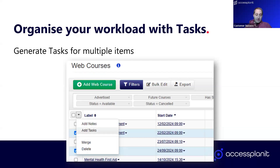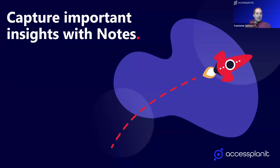It's really easy to use: go to one of your data grids, highlight all the items you want to add a task to in bulk, click the arrow next to the checkbox in the header row, and you'll see 'Add tasks' and 'Add notes' — that will add it to every single item you've selected in that data grid. That brings us on to the next topic: notes — capturing those important insights.